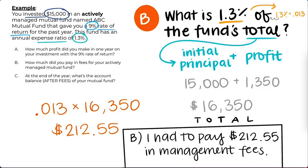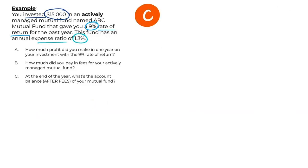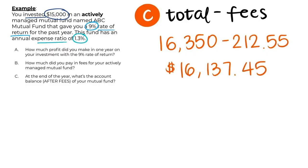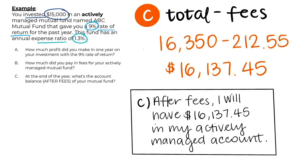Our last question C asks us what the account balance of our mutual fund is after the fees. All we have to do here is take the total value and subtract the fees we calculated from question B. Our total of $16,350 minus the management fees of $212.55 equals $16,137.45. This is the account balance in our actively managed ABC mutual fund.